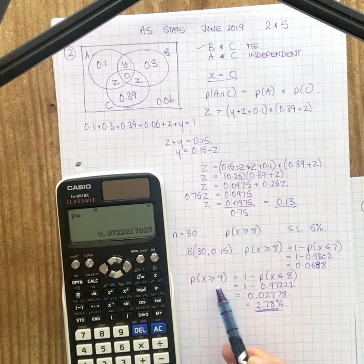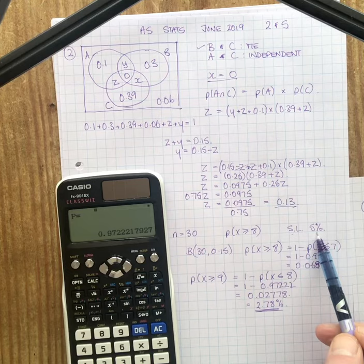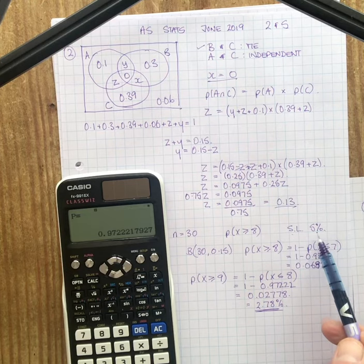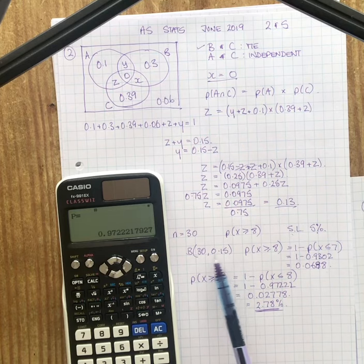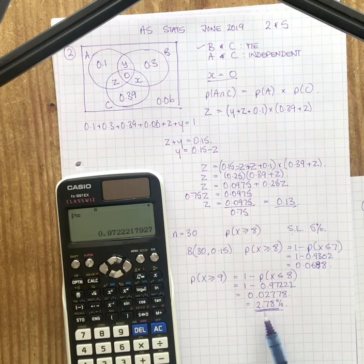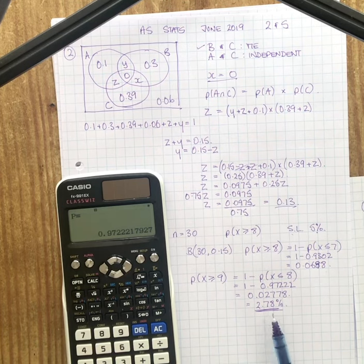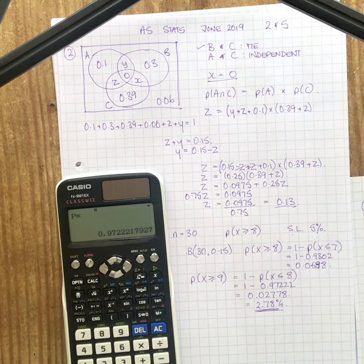X is greater than or equal to 9 is my critical region. And the last bit of the question says, although we set the significance level at 5%, what's the actual significance level? Well, the actual likelihood that in this distribution here, sample of 30 people, the probability they'll choose chocolate is 15%. What's the probability then that 9 or more will choose chocolate out of those 30? That's 2.78%. So that is your significance level, not the 5% that you set as your benchmark earlier on. That's question five.